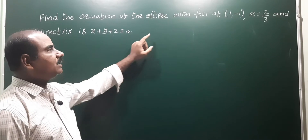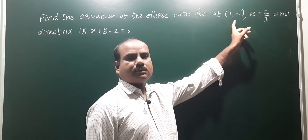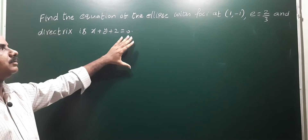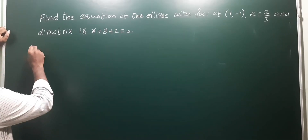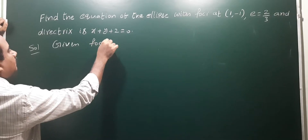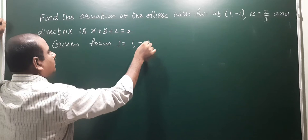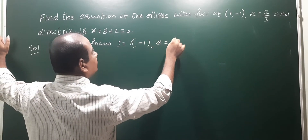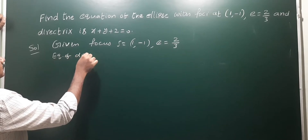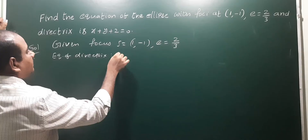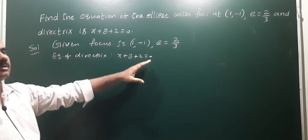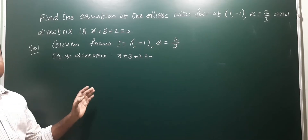Find the equation of the ellipse with focus at (1, -1), eccentricity 2/3, and equation of directrix x + y + 2 = 0. We have to find the equation of the locus. Given: focus S = (1, -1), eccentricity e = 2/3, and equation of directrix is x + y + 2 = 0. The general form is SP/PM = e.